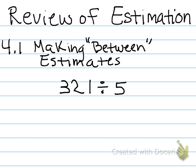First, we're going to do lesson 4.1, which is making between estimates. Take it away, JoJo. So first, you see 321 divided by 5.